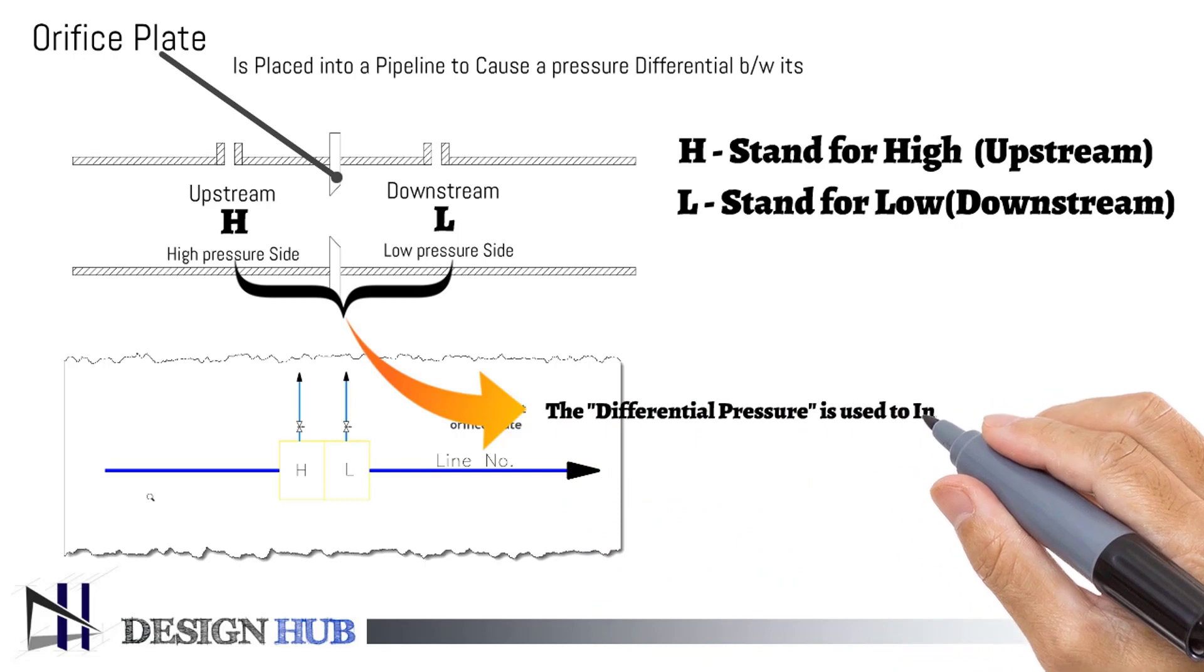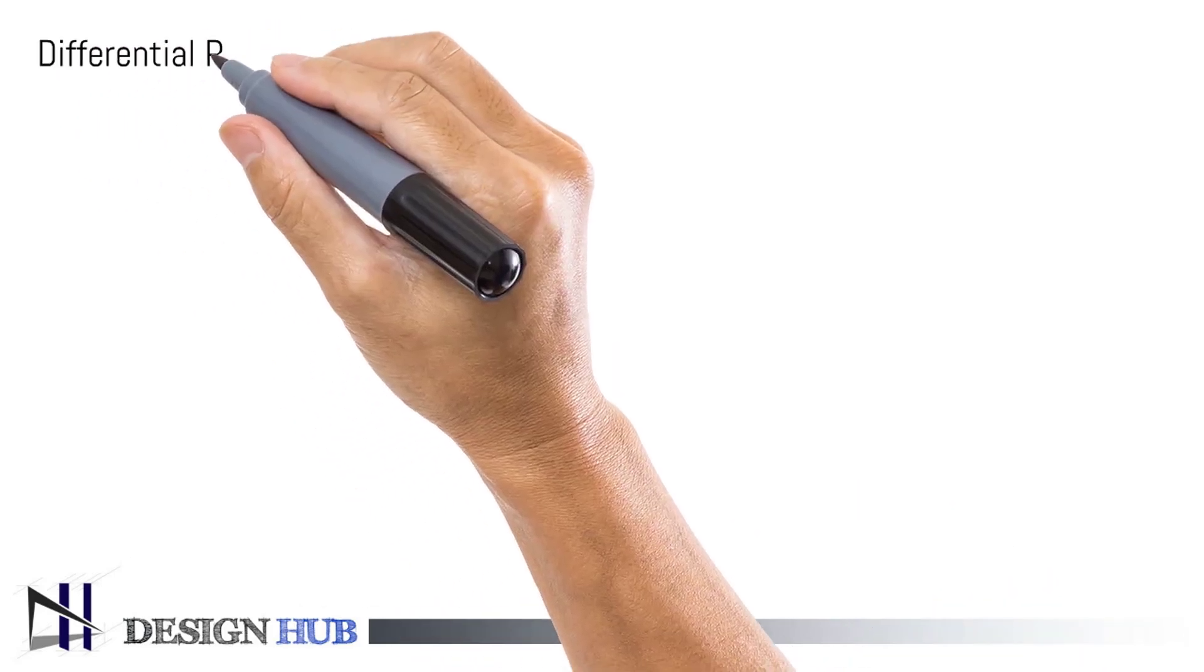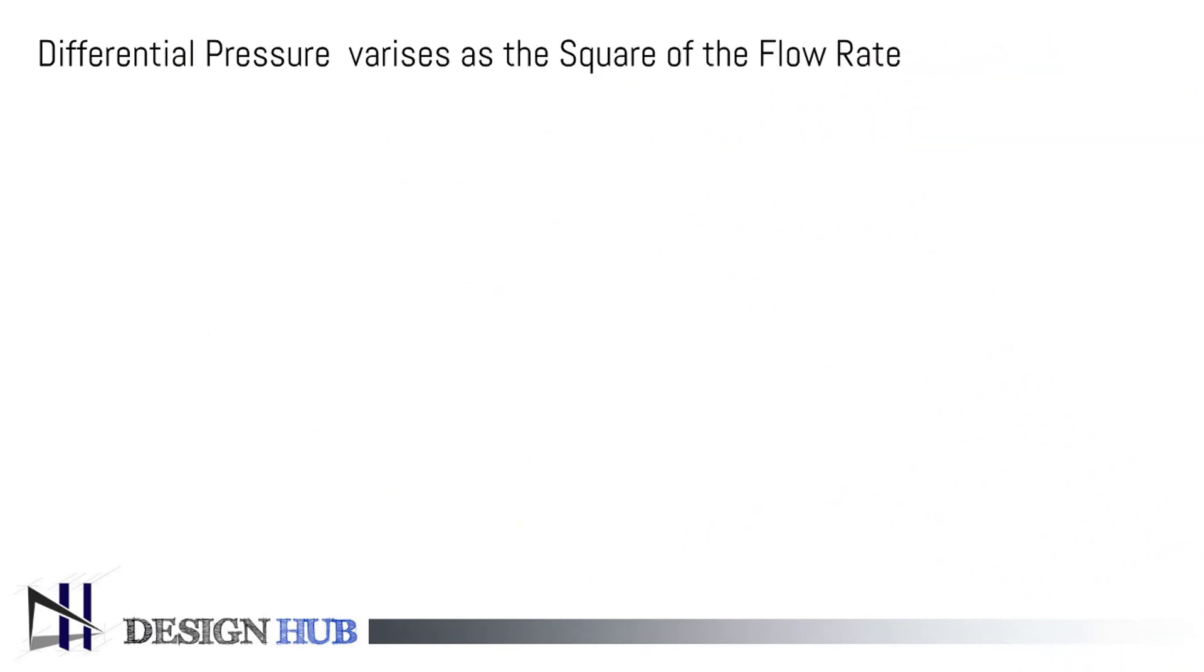The difference between upstream and downstream pressure is used to indicate the flow rate. Differential pressure varies as the square of the flow rate. You can see this in the formula and chart.